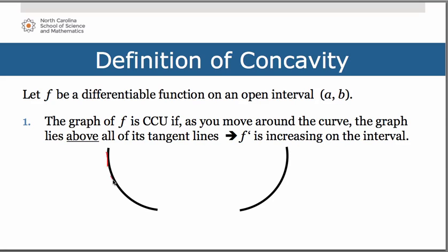If I were to draw tangent lines here, notice as you go around the curve, the slope is becoming less pronounced. So maybe over here the top one has a slope of like negative three, this second one has a slope of negative two, maybe negative one, maybe negative a half. Notice as you come around the curve from left to right, those slope values are increasing. Over here we have positive slopes, and as you go around the curve from left to right, they're getting more steep — maybe a half, one, two, three. So again, as you come around the curve left to right, those slope values, the derivative, are all increasing.